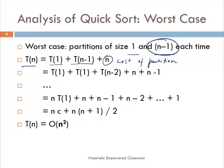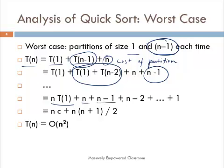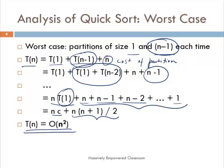If we substitute n-1 in the same formula and apply the substitution method, T(n-1) becomes T(1) + T(n-2) + (n-1). Continuing this process, we get n times T(1) plus the summation n + (n-1) + (n-2) + ... + 1. This summation is n(n+1)/2. With T(1) as a constant, this term is of the order n². So the worst case complexity T(n) of quicksort is O(n²).